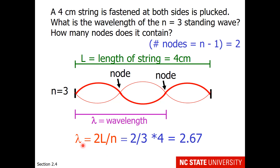If you want a more general formula, the wavelength is equal to 2 times the length of the string divided by the energy level you're given, which in this case was 3. Alright, please proceed to the jump rope demo.